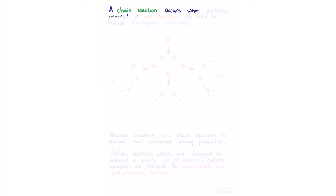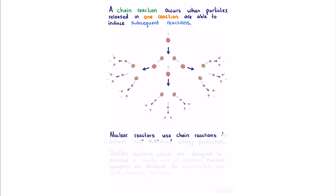A chain reaction occurs when particles released in one reaction are able to induce subsequent reactions.